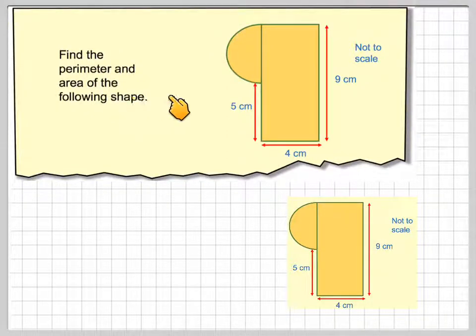Find the perimeter and the area of the following shape. So what we've got here is a rectangle with a semicircle.